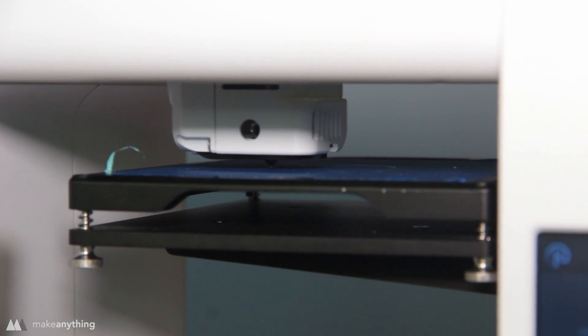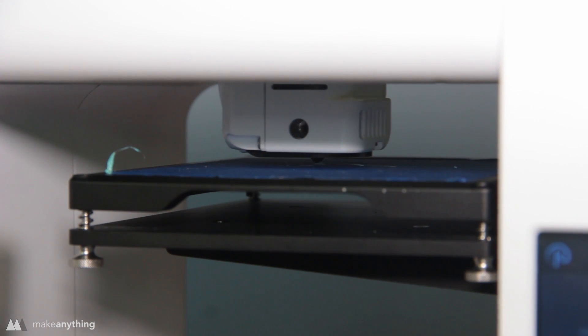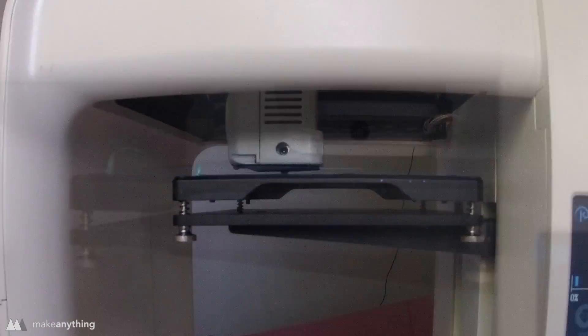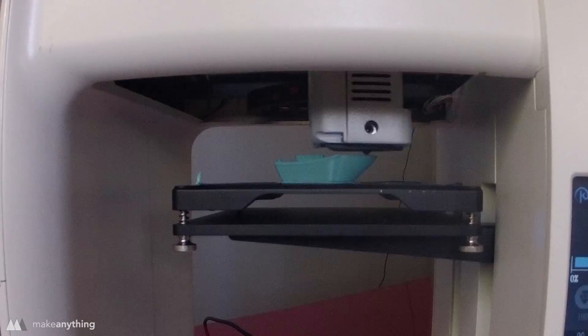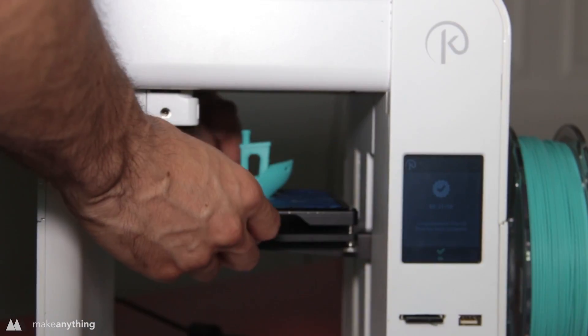My second print is going to be that little Benchy model that I use for all my reviews because of course we want a benchmark to compare it to all the other printers I've tried out. So here it is printing out in that same Polymaker teal PLA material which I just love. What a great color.